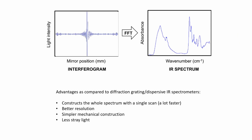The light intensity can then be plotted versus the position of the adjustable mirror in the interferometer assembly. Using a Fourier transform, this data can be used to construct the IR spectrum, which gives us useful structural information about chemical compounds. Advantages of FTIR systems over classical dispersive ones include faster scan times, higher resolution, simpler mechanical construction, and less stray light.